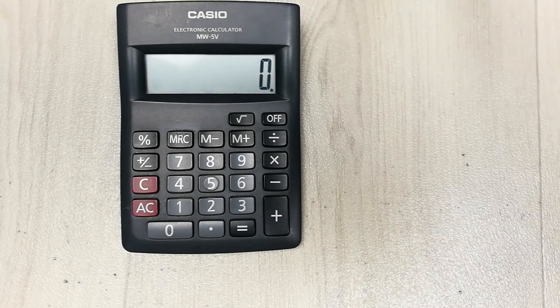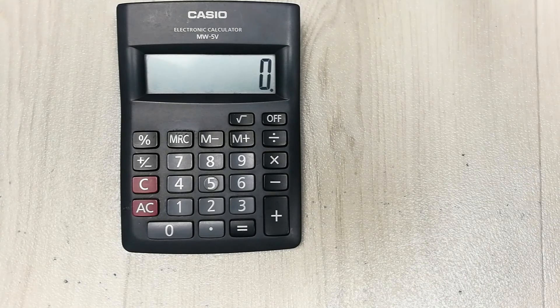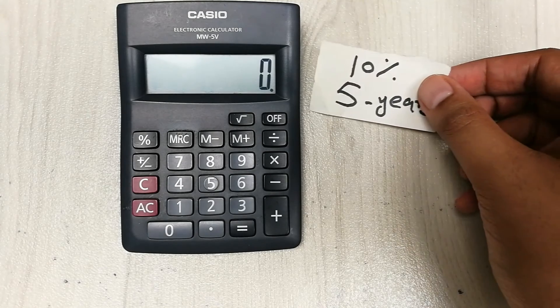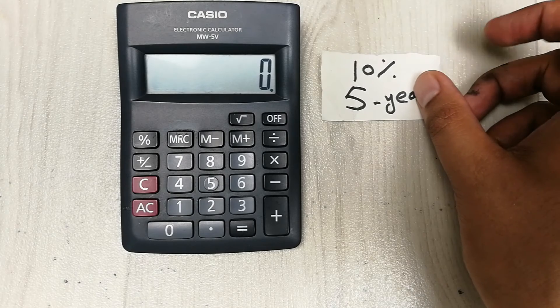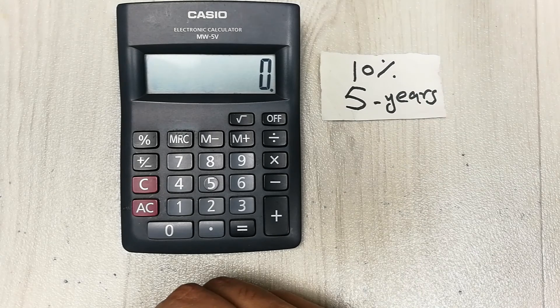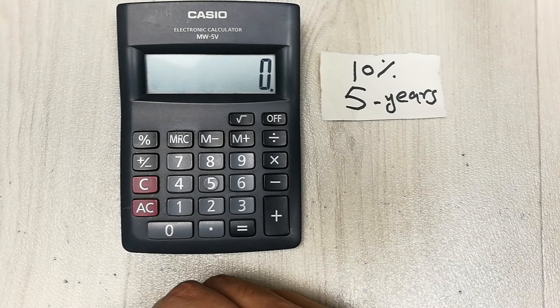Let's say we have the interest rate 10 percent and the period is five years, and we want to calculate the PVIF on our simple calculator.